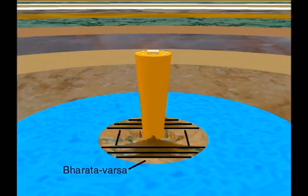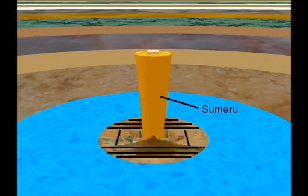Jambudvip is centered on the geometrically shaped Sumeru mountain, which represents the world axis, and is surmounted by the city of Brahma, the universal creator.